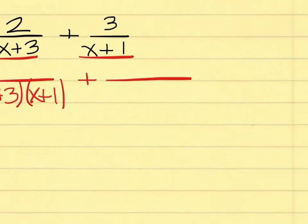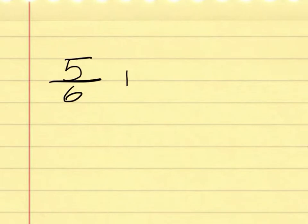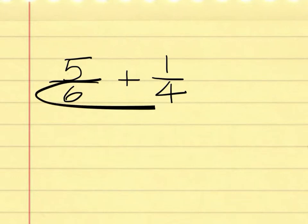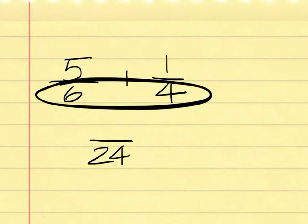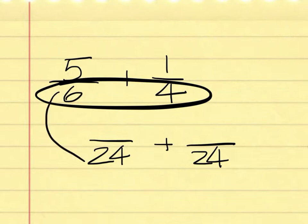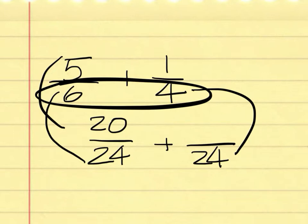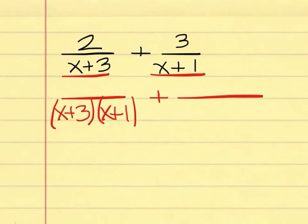It's the same thing as doing this: if I had 5 over 6 plus 1 over 4, the least common denominator is 12. But what if I didn't know that and just multiplied them together to get 24? I can still add the fractions with a denominator of 24. By 4 there gives me 20, and by 6 there gives me 6 — same process applies here.